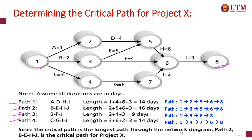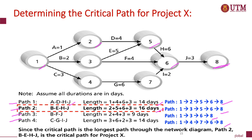For example, path 1 goes through nodes 1, 2, 5, 6, and 8. The sequence of activities for path 1 is A, D, H, J, and the total duration is 14 days. Continue to list the sequence of activities and time duration for path 2, path 3, and path 4. Path 2 has 16 days, which is the longest duration compared with the other 3 paths. Therefore, path 2 is the critical path since it is the longest path in the network diagram.